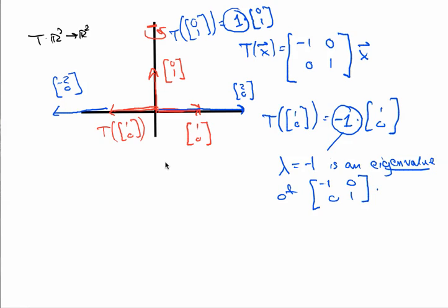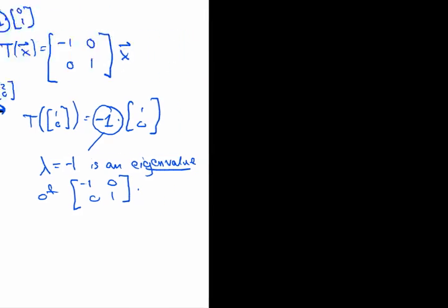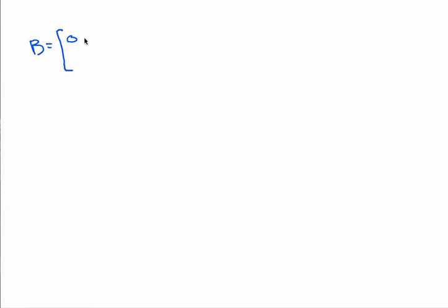Let's do another example where we have a different matrix and see if we can spot whether or not certain numbers are eigenvalues. The matrix I have in mind is B equals 0, 1, 2, negative 1. We're going to switch gears from the previous approach — where we threw vectors at the matrix — and instead think about certain numbers coming at this matrix and ask if they are eigenvalues. So the question is: is lambda equals 1 an eigenvalue for this matrix?